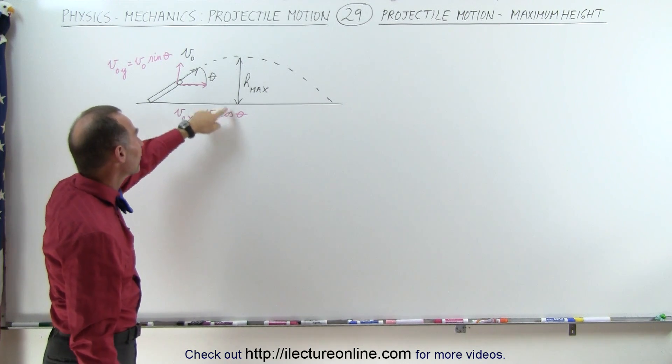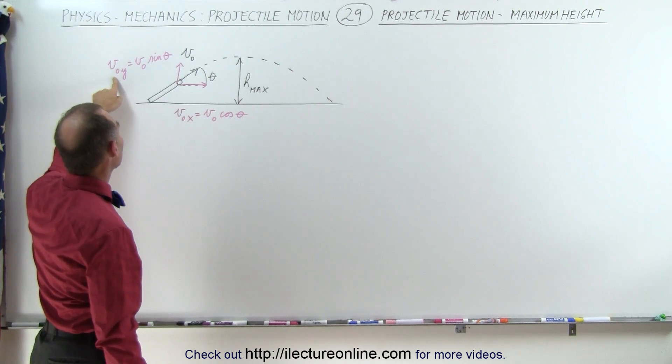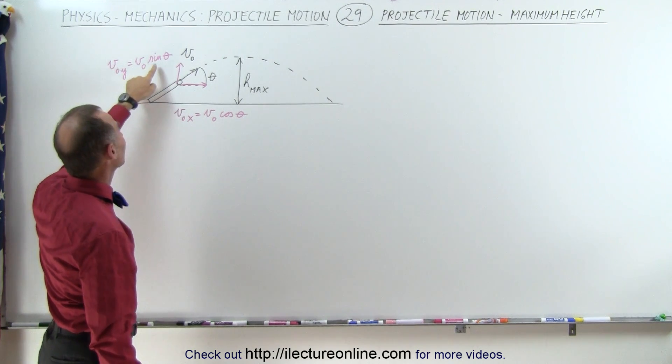And a vertical component to the velocity v sub-naught in the y-direction equals v sub-naught times the sine of the angle theta.